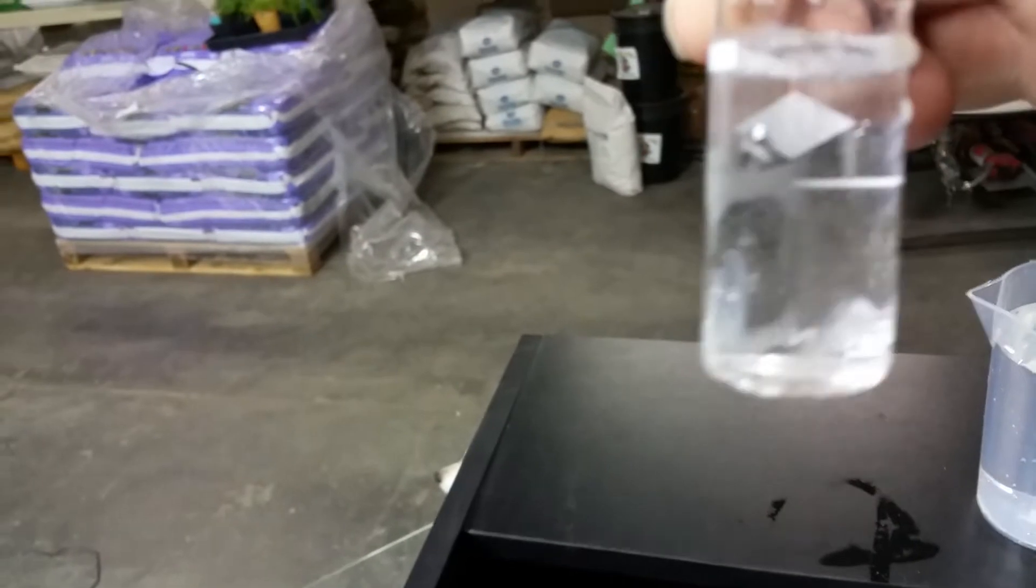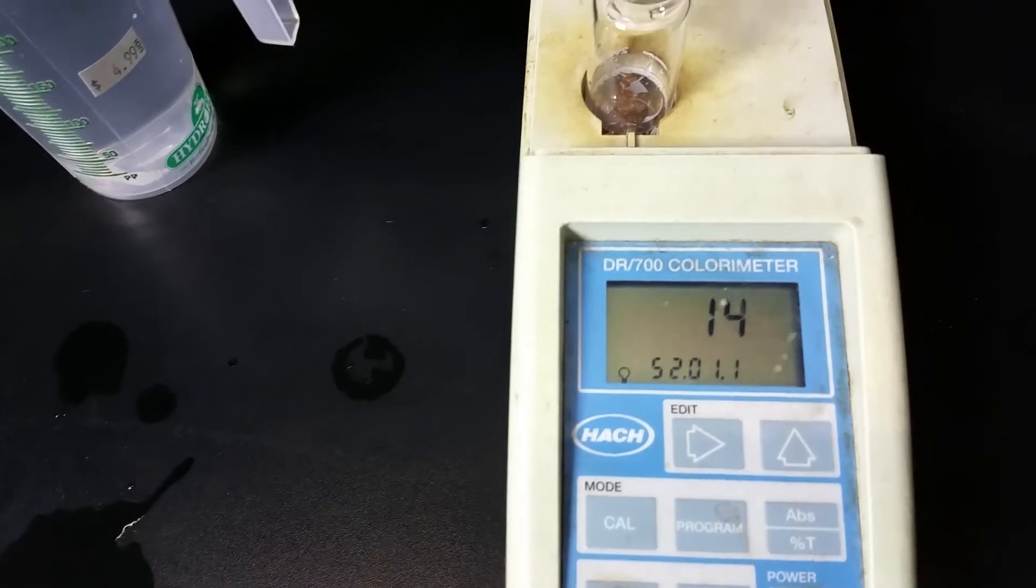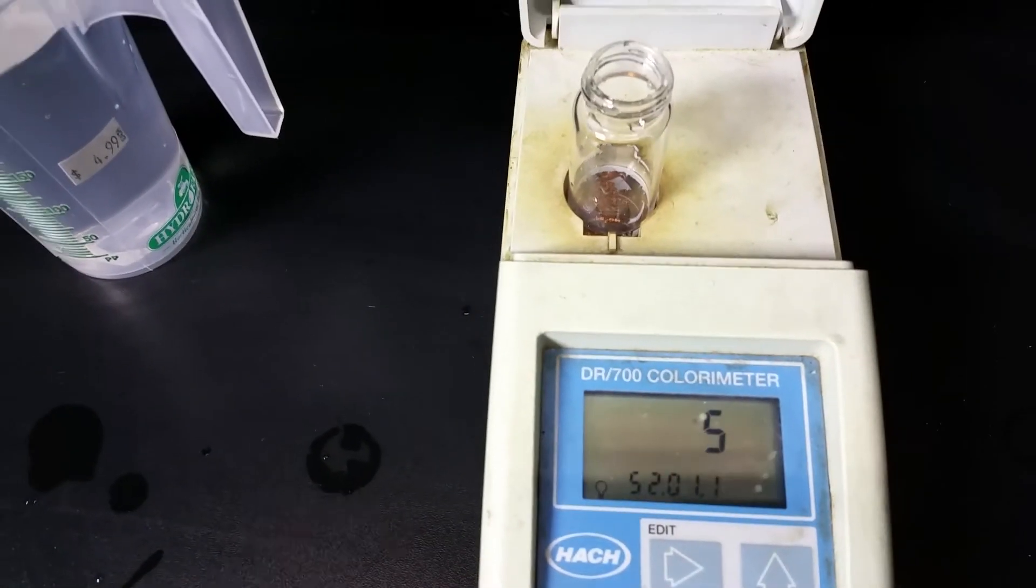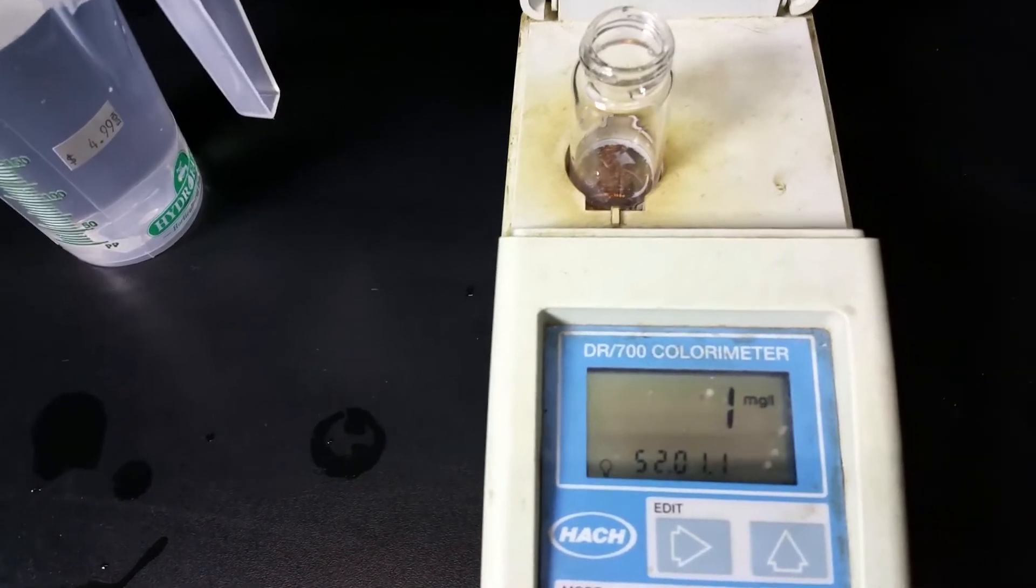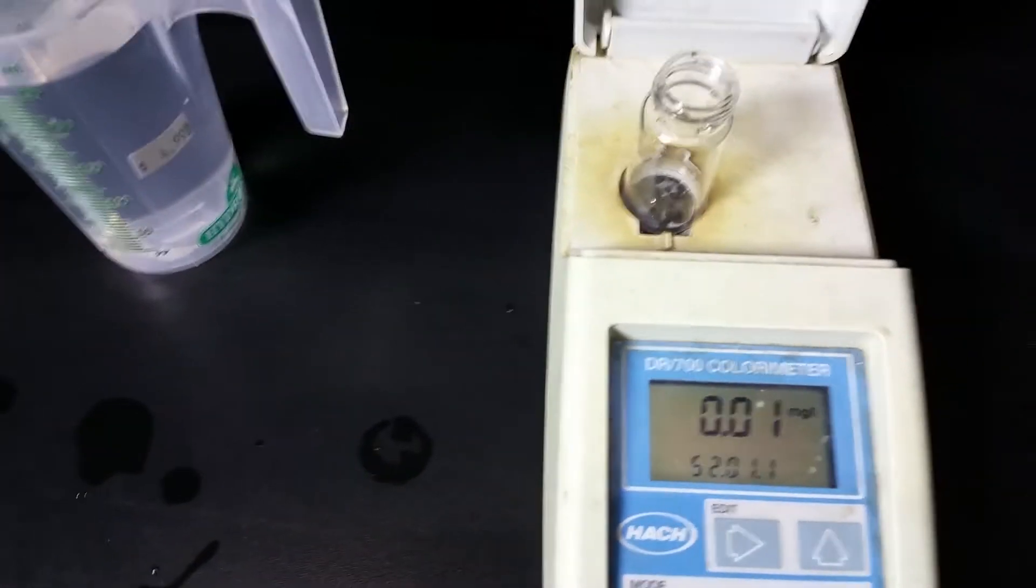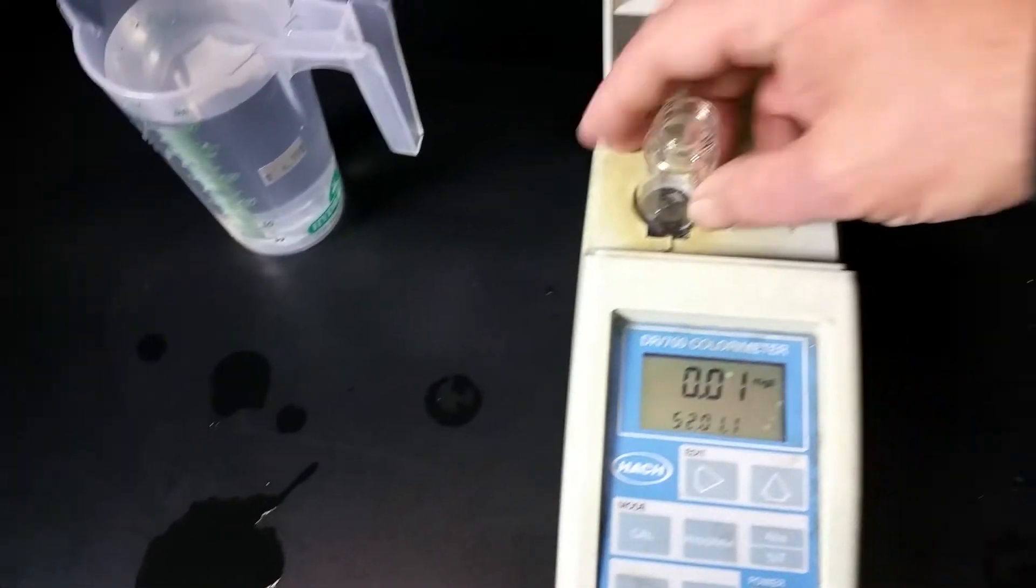So you can already see the pink's gone. So the carbon filters worked. I can see just from the eye, but we're going to go ahead and see how well it worked. Put it in here and we're going to read it. So this one is after it's coming out of the RO system. 0.01. See, that's really good. So we know as of this test right now, it is working.